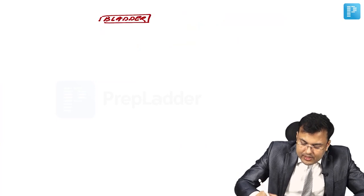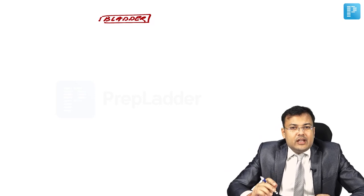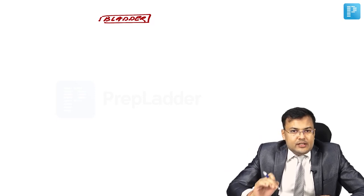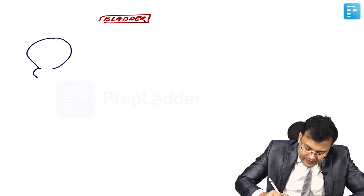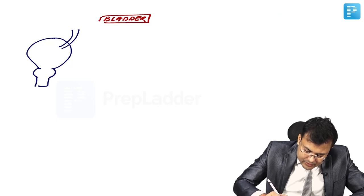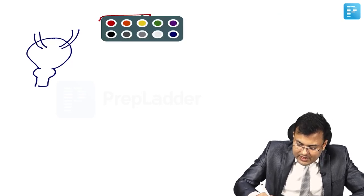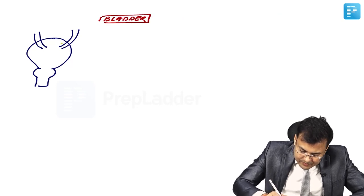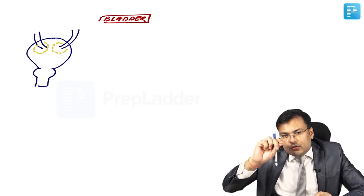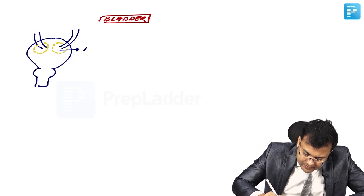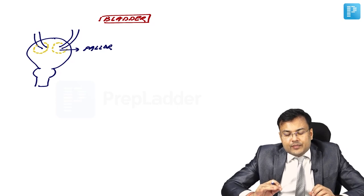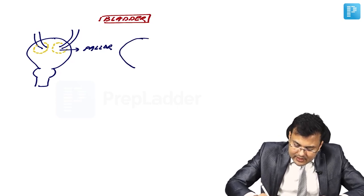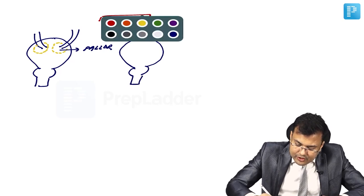When infection reaches the bladder, the earliest change seen on cystoscopy is pallor around the ureteric orifice. This is a frequently asked exam question: the earliest cystoscopic change in genitourinary tuberculosis is pallor around the ureteric orifice.